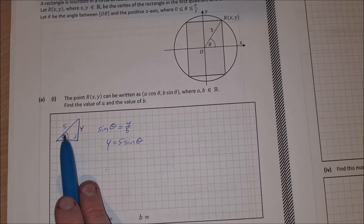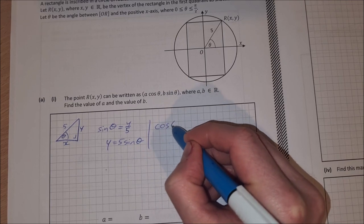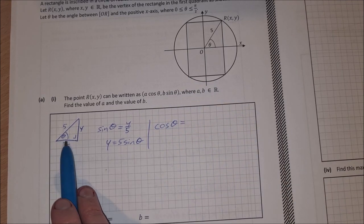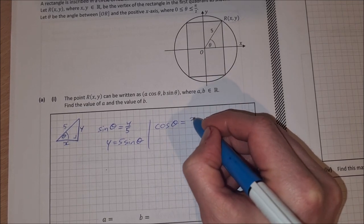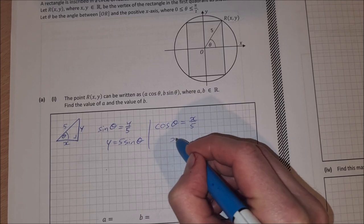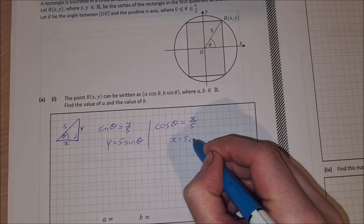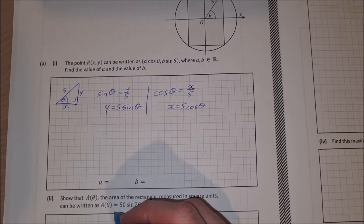And then I can do cosine theta there as well. So cosine of theta is equal to the adjacent over the hypotenuse. So that's x over 5. And again, multiply across by 5 to isolate x. So x is equal to 5 cosine theta. So both A and B then are equal to 5.